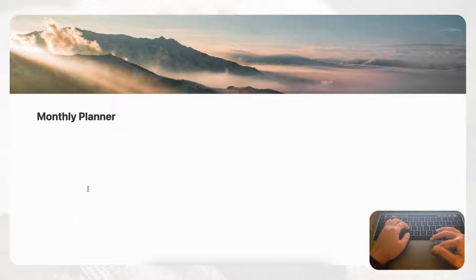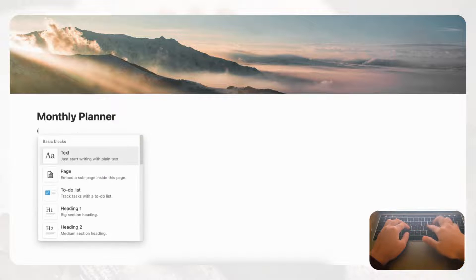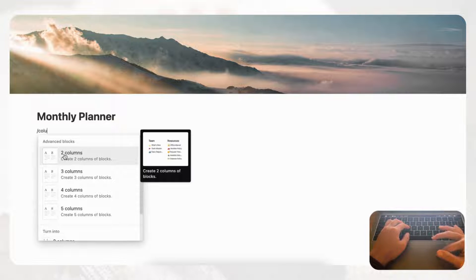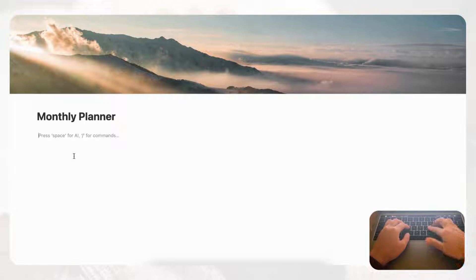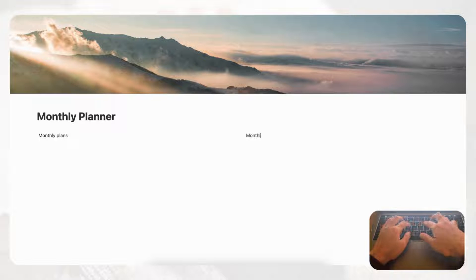In this monthly planner we are going to have our monthly plans on the left-hand side and a main monthly calendar on the right-hand side. For that we'll want to make two columns, so type slash column and choose two columns. Label this side 'monthly plans' and the other side 'monthly calendar' as placeholders, because it's very easy to lose the columns.